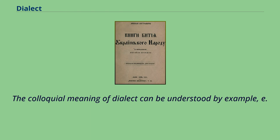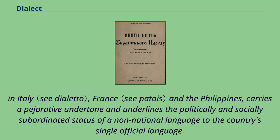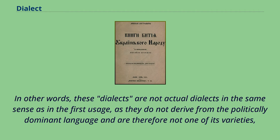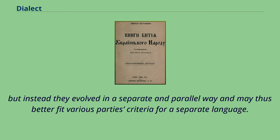The colloquial meaning of dialect — as understood in Italy, France, and the Philippines — carries a pejorative undertone and underlines the politically and socially subordinated status of a non-national language relative to the country's single official language. In other words, these dialects are not actual dialects in the first linguistic sense, as they do not derive from the politically dominant language. Instead, they evolved in a separate and parallel way and may thus better fit various parties' criteria for a separate language.